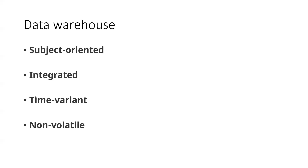The data warehouse is time-variant, so we can see historical data and archive old data. For example, if a business owner wants to check how they handled a pandemic situation ten years ago, the same strategy can be followed. They can check it from the data warehouse. That's why it's time-variant. It is also non-volatile — it cannot be erased because this data is very important for the business.